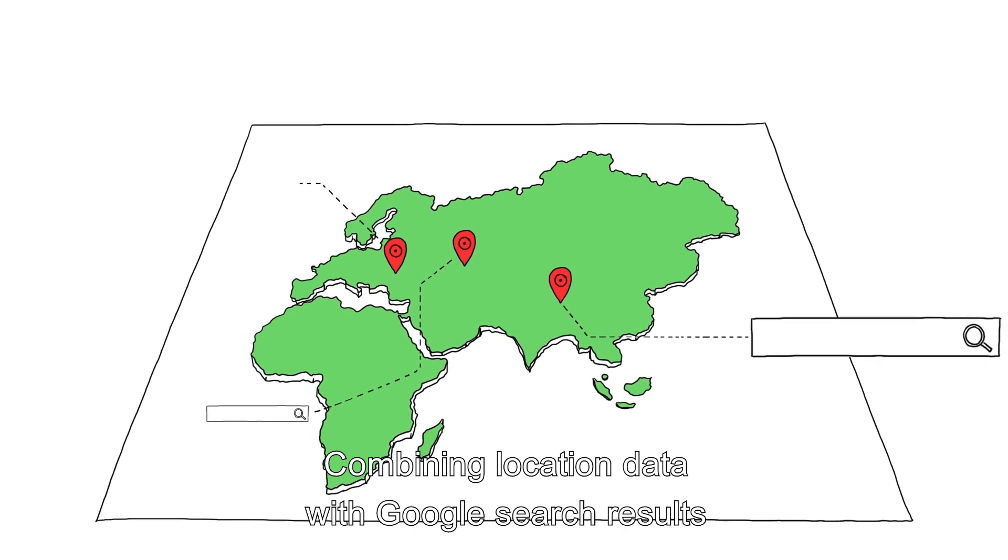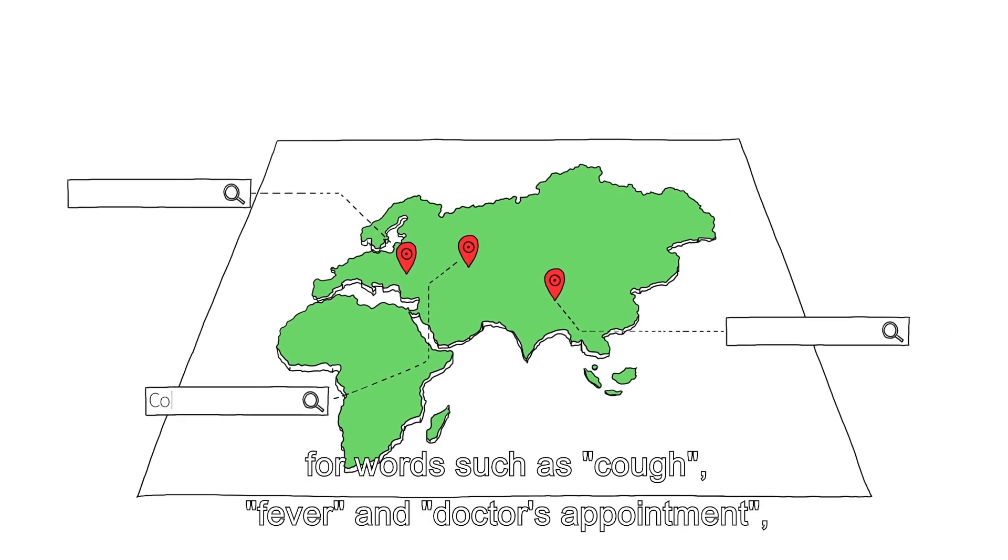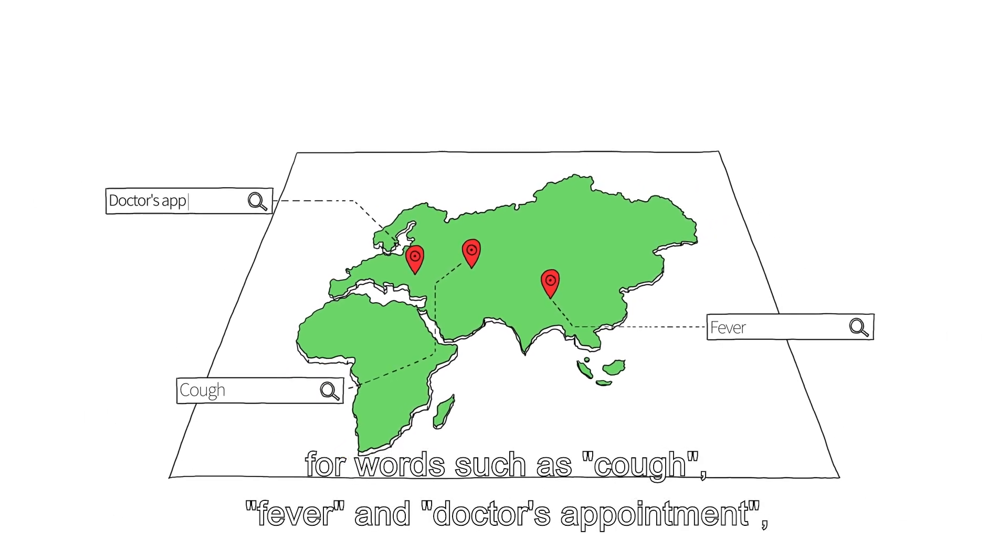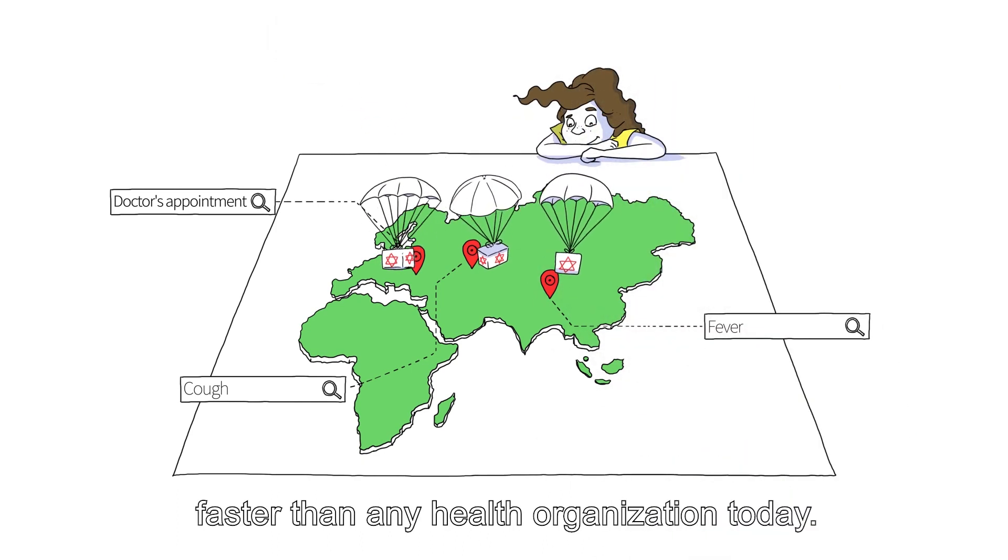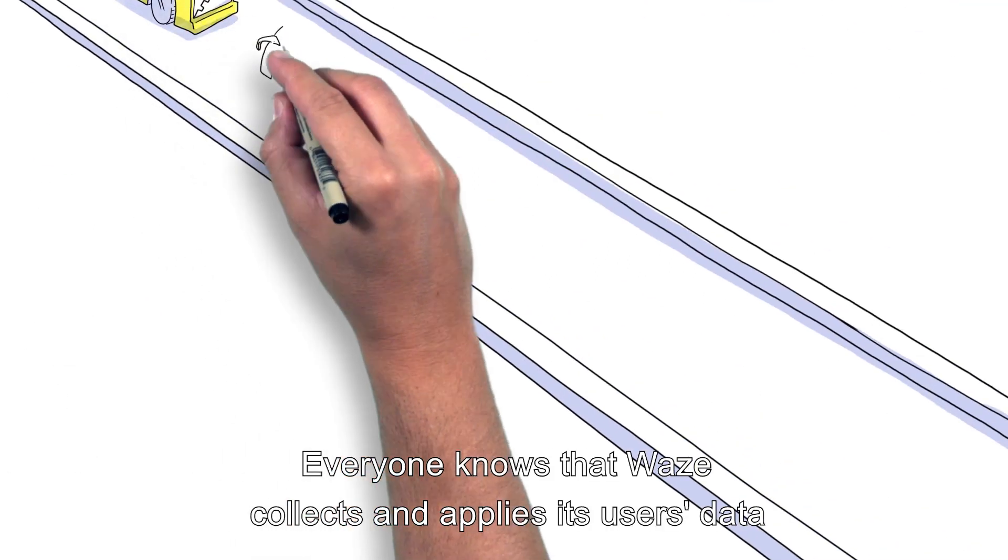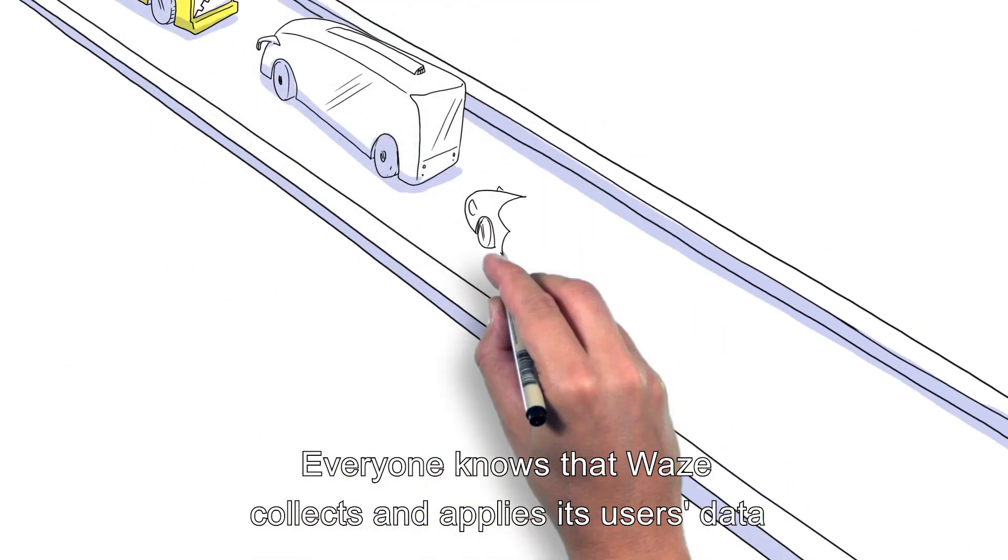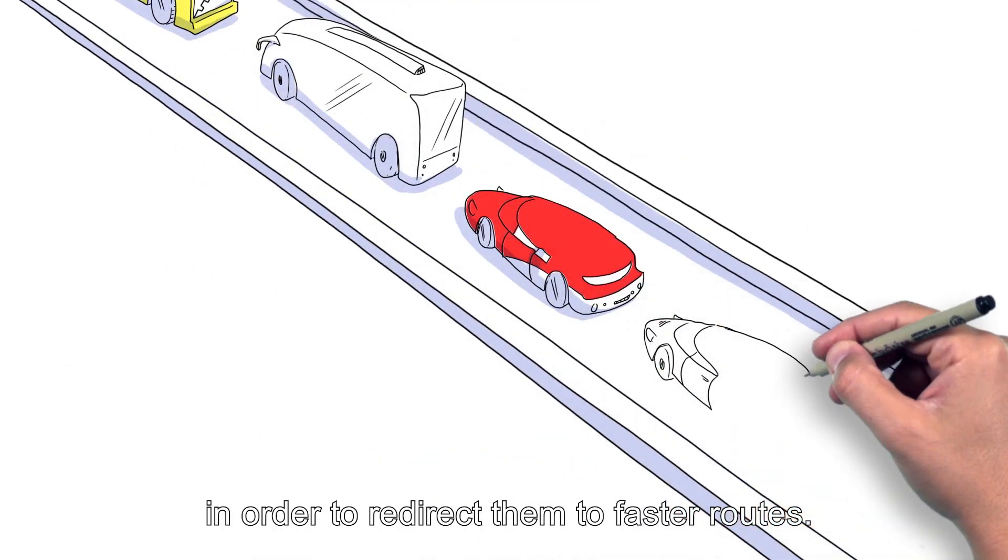Combining location data with Google search results for words such as cough, fever, and doctor's appointment enables us to track and predict the spread of epidemics faster than any health organization today. Everyone knows that Waze collects and applies its users' data in order to redirect them to faster routes.